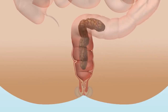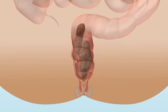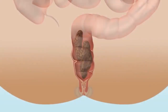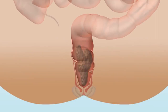When stool fills your rectum, nerve endings register that your bowel wall becomes distended and a signal is sent to your brain, telling you that it's time to find a toilet. At the same time, your internal sphincter relaxes by reflex and stool moves down towards the anus.